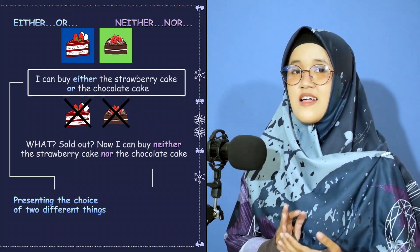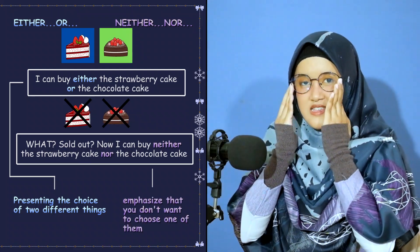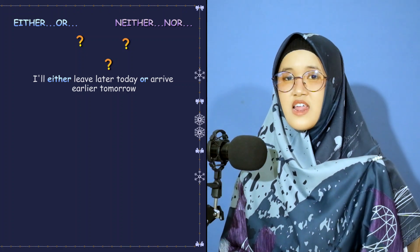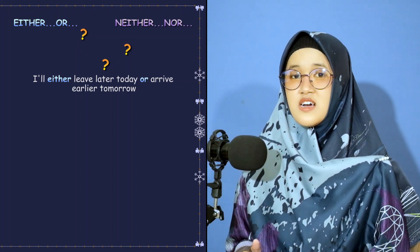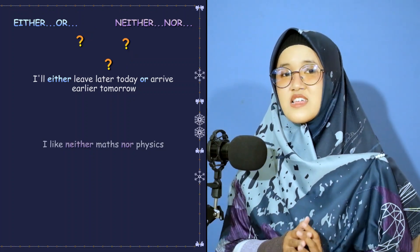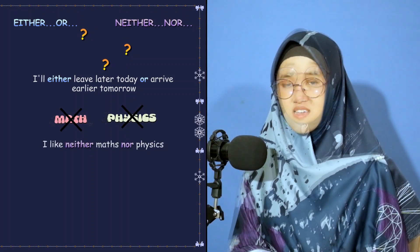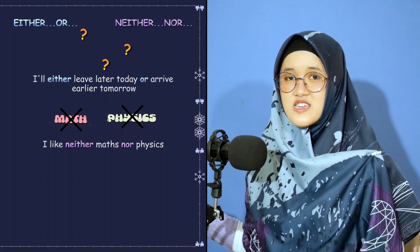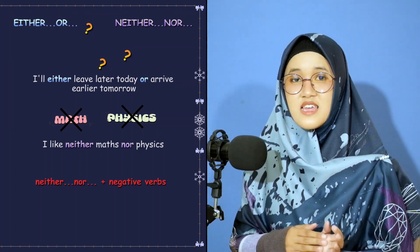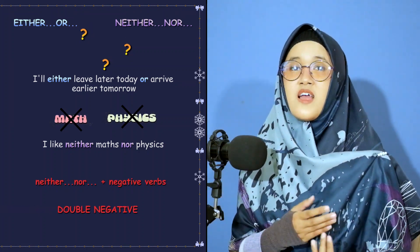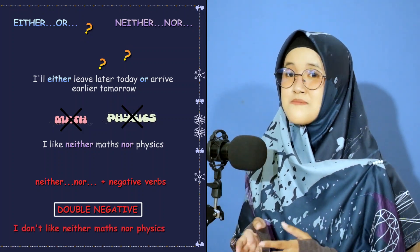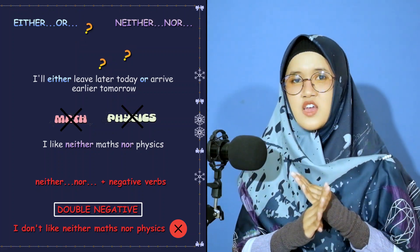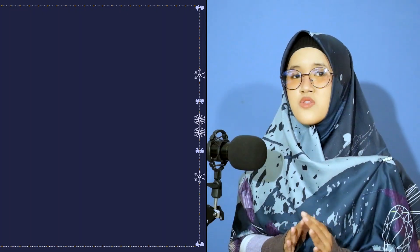You can also use 'neither...nor' to emphasize that you don't want to choose either of them. For example: 'I'll either leave later today or arrive earlier tomorrow.' And: 'I like neither math nor physics.' Since 'neither' already has a negative value, it is not necessary to add a negative verb — because it creates a double negative. 'I don't like neither math nor physics' is wrong.